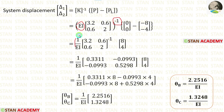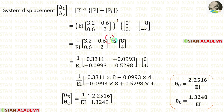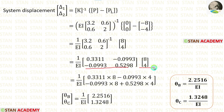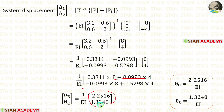EI inverse equals 1 upon EI. We add the two matrices, and after adding we get the resulting matrix. We then calculate the inverse of the stiffness matrix using a calculator. If you do not know how to calculate the inverse on your calculator, see the link in the description below. After getting the inverse, we multiply the two matrices to get the final result.